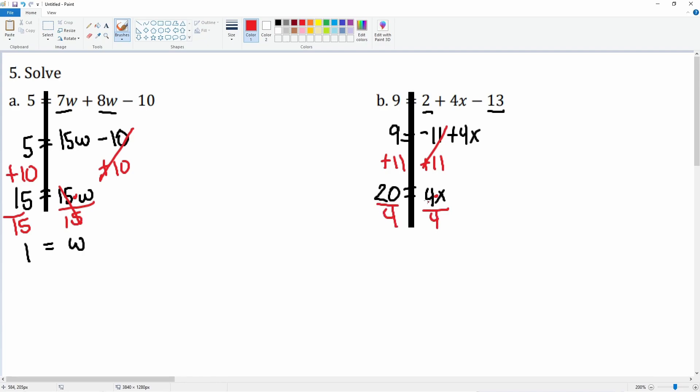By 4 on both sides. 4 over 4 cancels, leaving you with just x. 20 divided by 4 becomes 5, so x equals 5.